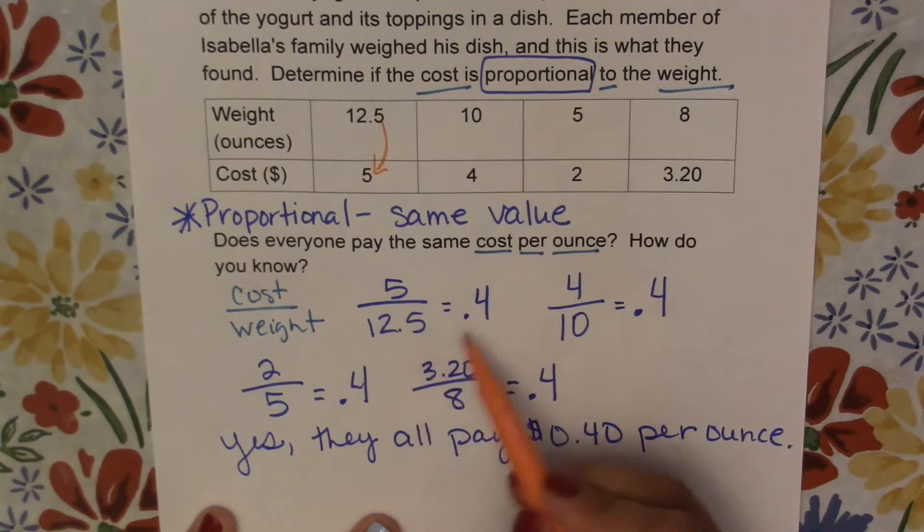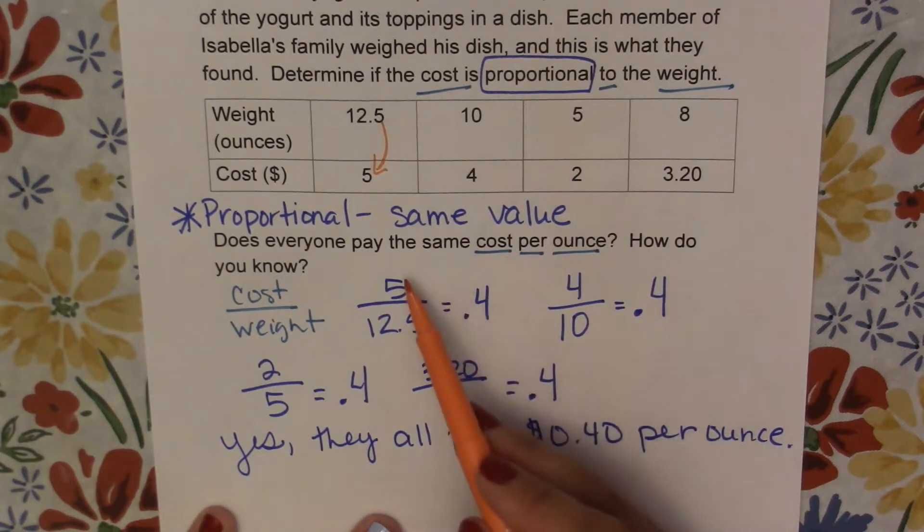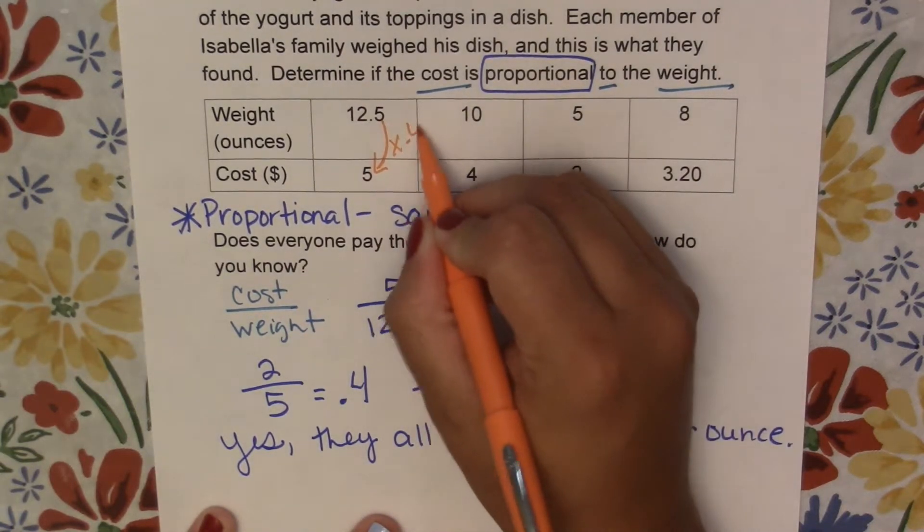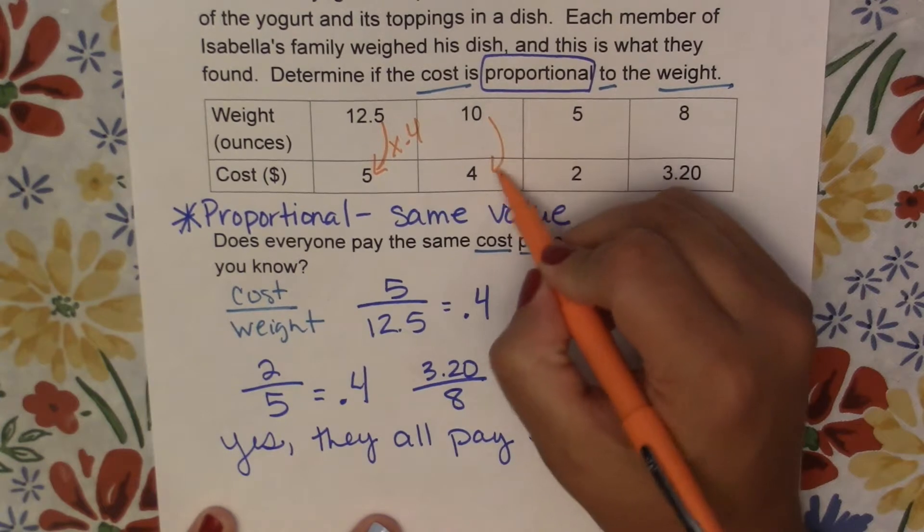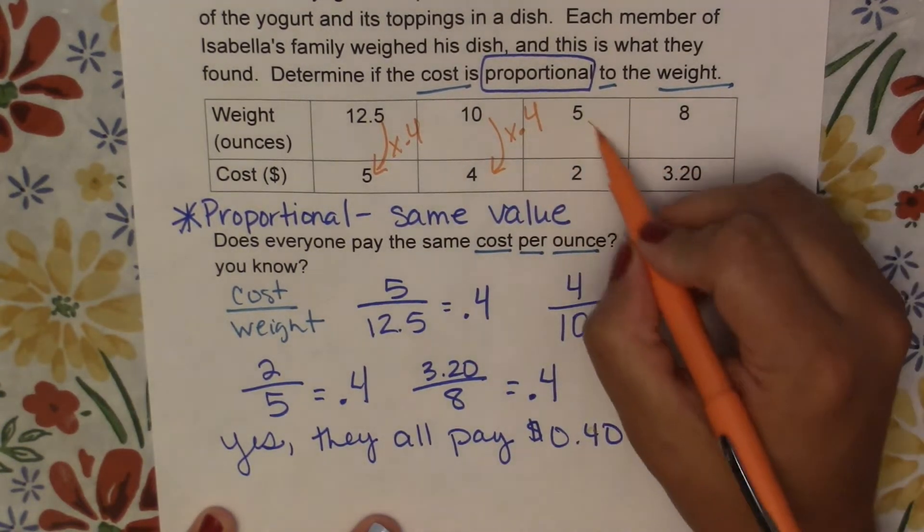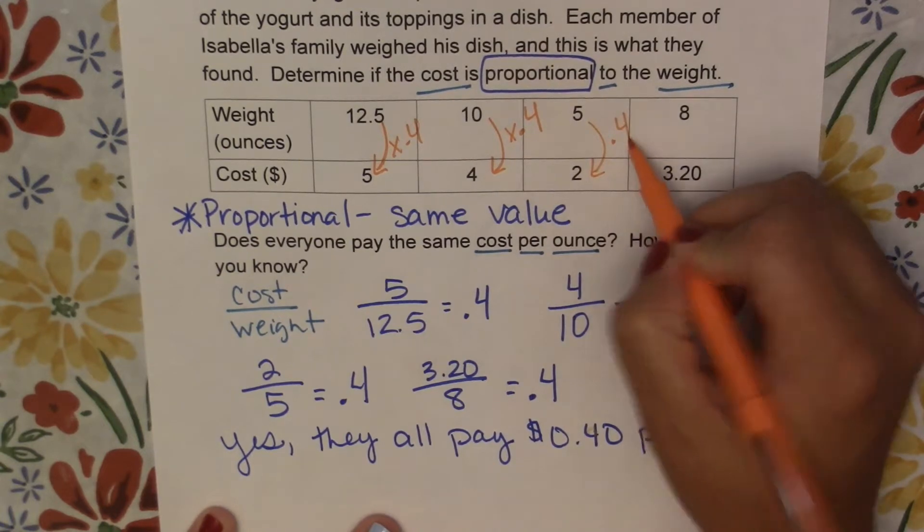We're taking the weight and we're timesing it by the cost, or the cost per ounce, our unit rate, and then we're going to get the amount they paid. So this is times 0.4. This one is the same thing, times 0.4. And this one is the same thing. We would times it by 40 cents to get our answer.